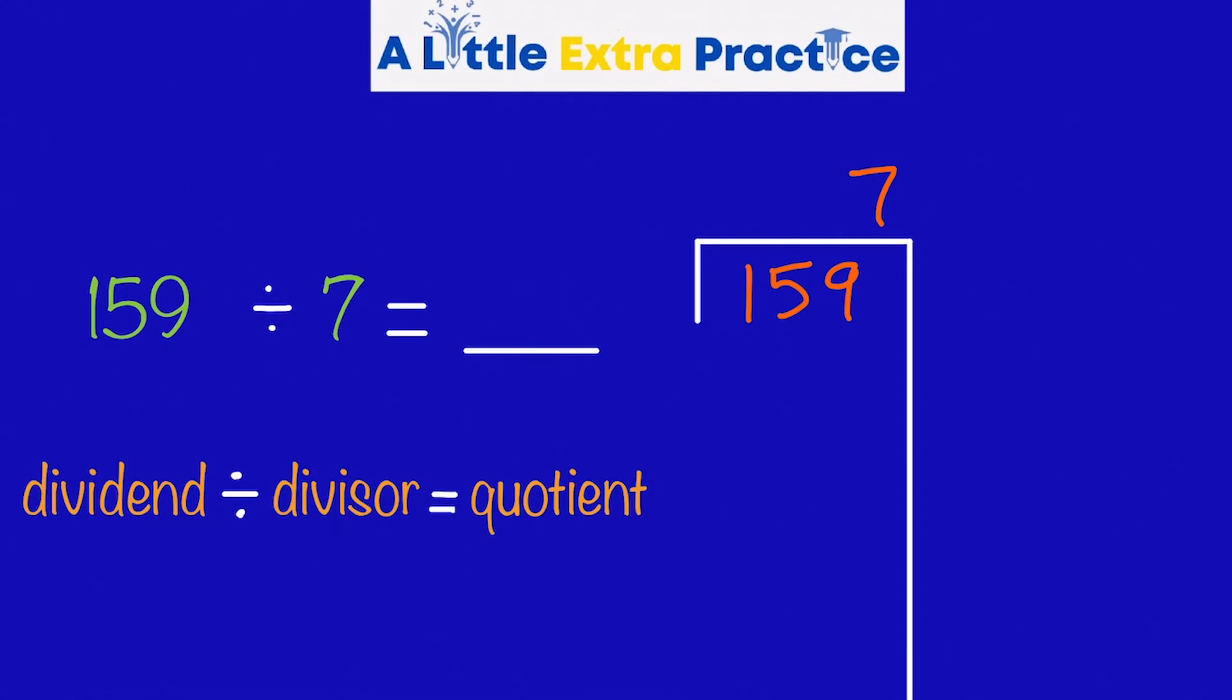Okay, our first problem today is 159 divided by 7. 159 is the dividend, 7 is the divisor, and of course, our answer will be the quotient. Remember, the dividend is the number being split up. The divisor tells us how many ways is it being split up. So, I have our long division symbol, and I put 159 inside, and then 7 on the top.